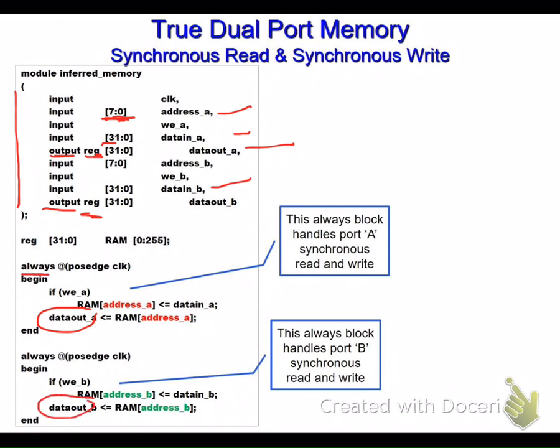We also have to define the data output as a register because it appears on the left-hand side in the always block. For synchronous read and write from port A and port B, we depend on the clock, which can be a positive edge or negative edge clock.